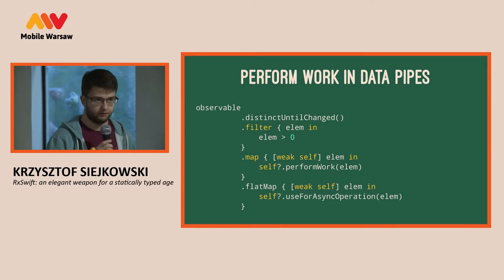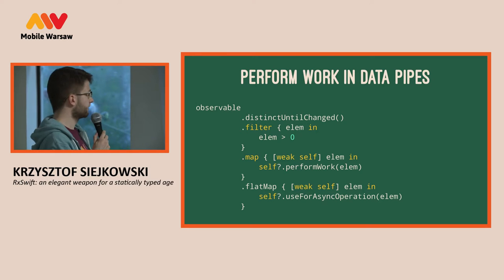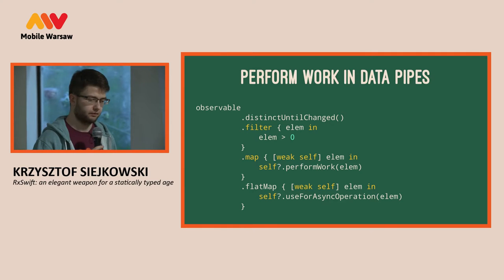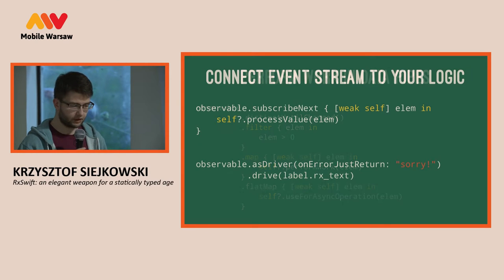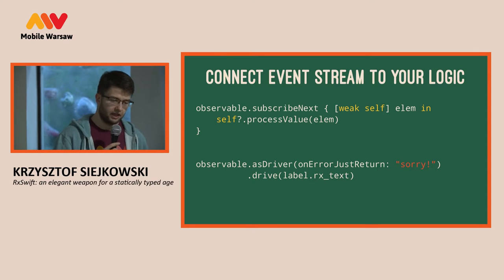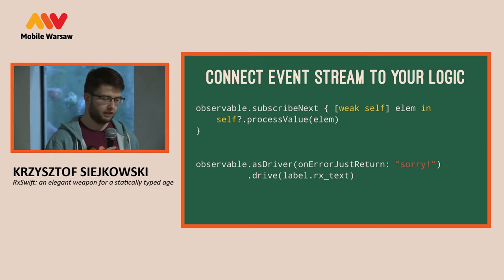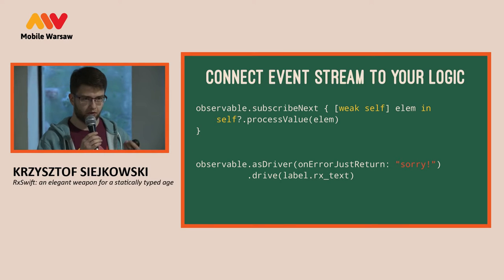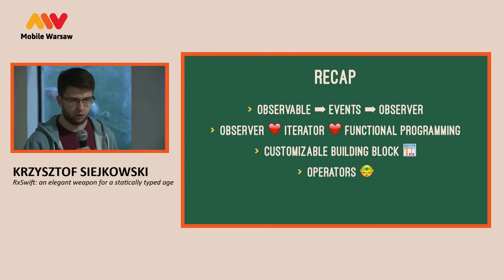When you have the observable you want, you might use it to perform some work. There is some data coming in the form of a next event and you can make all the usual operations on this data. You can map it, you can filter it, you can flat map it. There is something similar to reduce called scan, and many other methods for data processing. And then when the work is done, you can bind the observable data to your app by providing a subscription closure that will perform any logic you want.